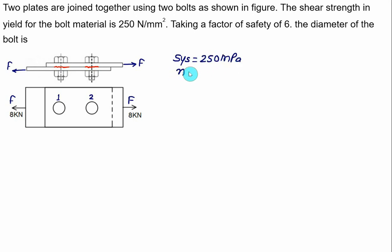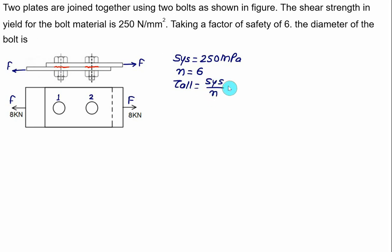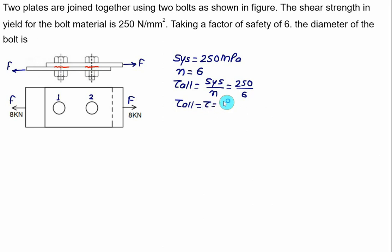The factor of safety N is given as 6. It means the allowable shear stress, tau allowable, will be equal to SYS divided by factor of safety, that is 250 divided by 6. So tau allowable equals 41.67 MPa.